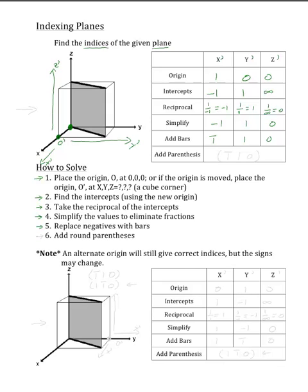Now our next step is to add the round parentheses. These will denote that we are finding the indices of a plane. Remember that these are indices and not coordinates, so we should not put a comma between the numbers. So our final answer will be open parentheses, bar 1, 1, 0, and close parentheses. And there you have it. That is how you find the indices of the plane.